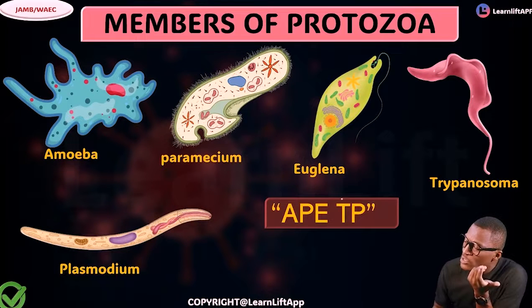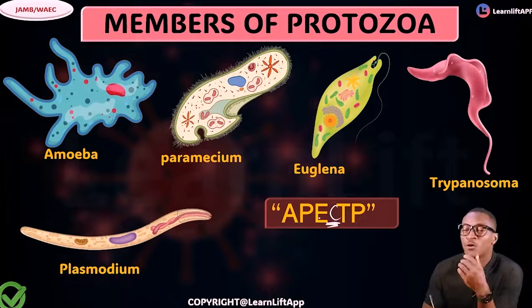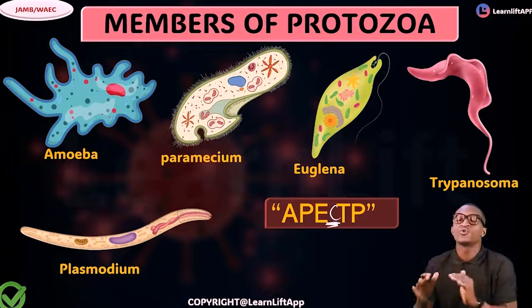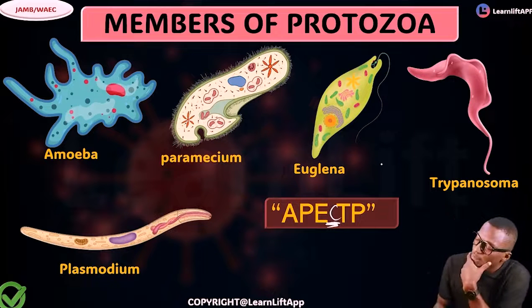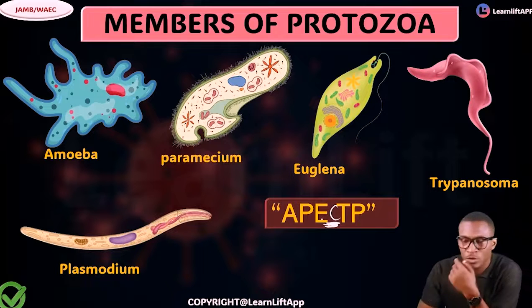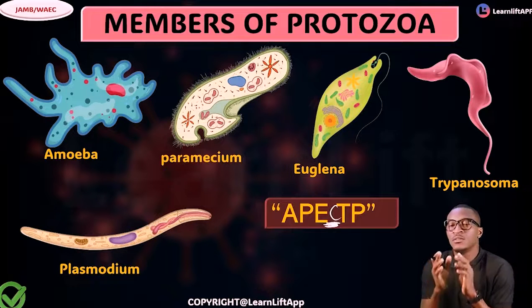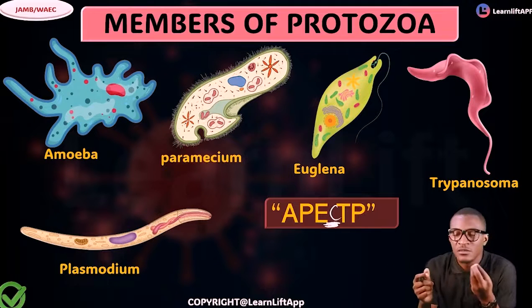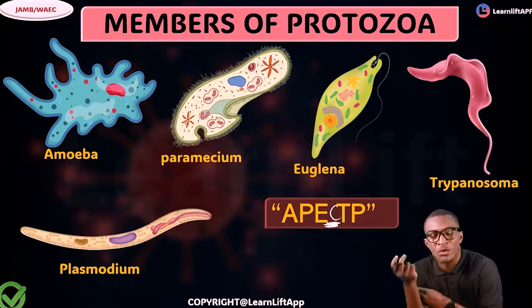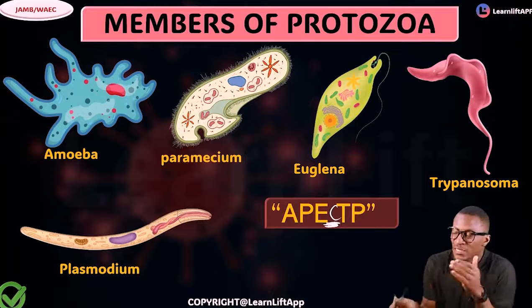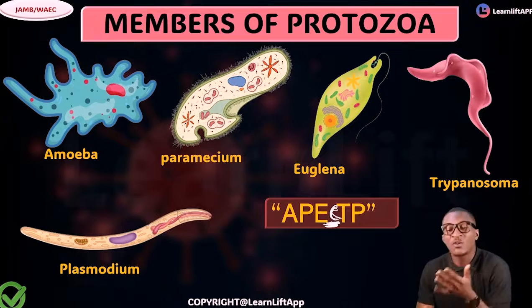Chlamydomonas is also part of Protozoa. At your current level you may not need this, but at A-level you will see that Chlamydomonas is classified under Animalia. Under Mastigophora we have two types: Zoomastigina and Phytomastigina — 'phyto' relates to plants while 'zoo' relates to animals. Chlamydomonas falls under Mastigophora.